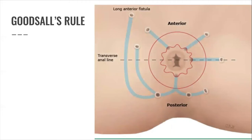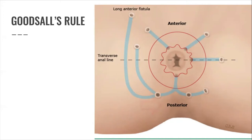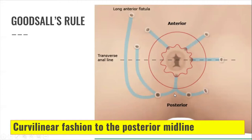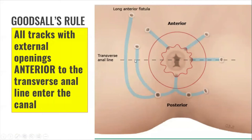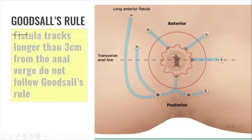Goodsall's rule is one of the most commonly cited principles to assist in the surgical management of anal fistula. To orient you, this is the transverse anal line — posterior and anterior — and these are the external openings of the fistula. The first rule states that external openings within 3 cm of the anal verge and posterior to the transverse line will travel in a curvilinear fashion. All tracts with external openings anterior to the transverse anal line will enter the canal in a radial fashion. Fistula tracts longer than 3 cm from the anal verge do not follow Goodsall's rule.